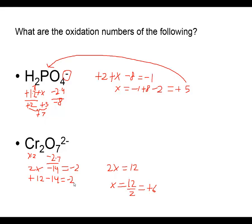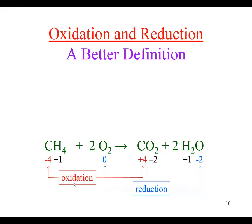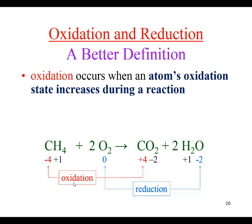We've just learned how to determine oxidation numbers. We want to use them to look at what's going on with transferring electrons. When oxidation is occurring, the oxidation number will be increasing for that element during the reaction. Let's look for which oxidation number is increasing.